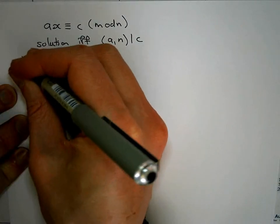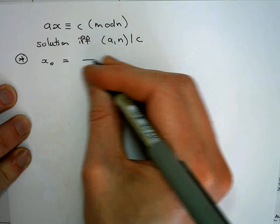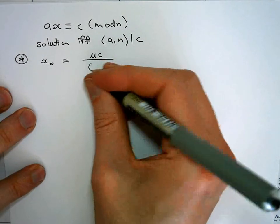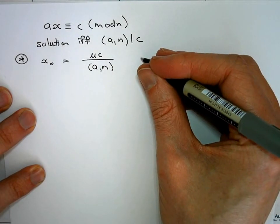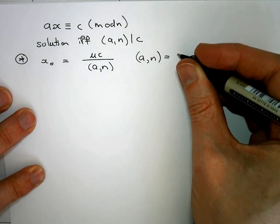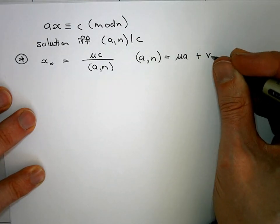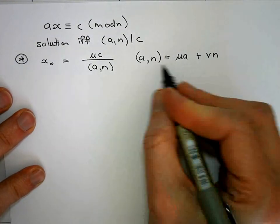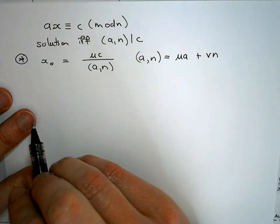In that case, one such solution is given by the following formula: you take U times C divided by the GCD of A and N. Now here U is the coefficient when I express the GCD of A and N as a linear combination of A and N. It's the coefficient of U in this unique way in which we can express this as a linear combination of A and N. That gives you one specific solution.